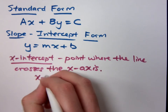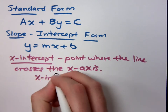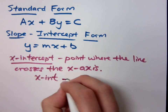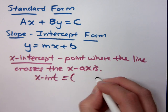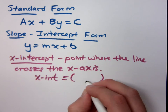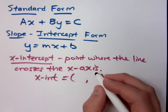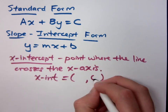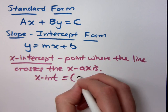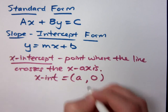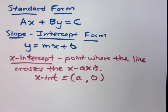Every X-intercept has — what do you know about that? If you cross the X-axis, Y is 0. So we're just going to let lowercase a represent the X-coordinate.